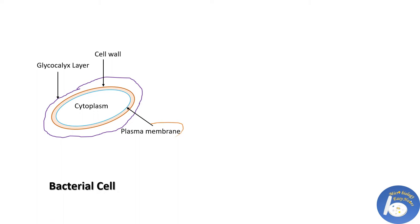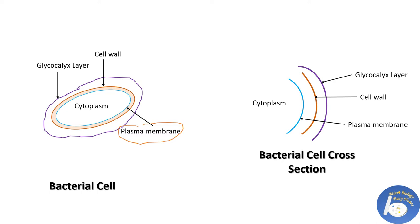Plasma membrane is also known as cytoplasmic membrane as it encloses cell cytoplasm. If you see the cross section of bacterial cell, the first outermost layer is glycocalyx, then cell wall, and after that plasma membrane can be seen.